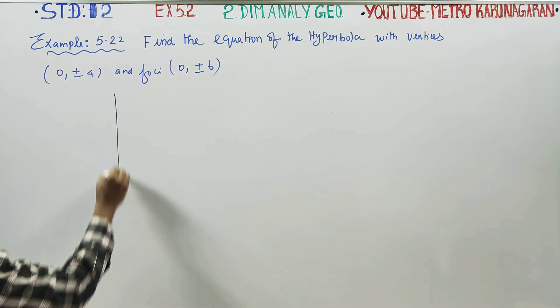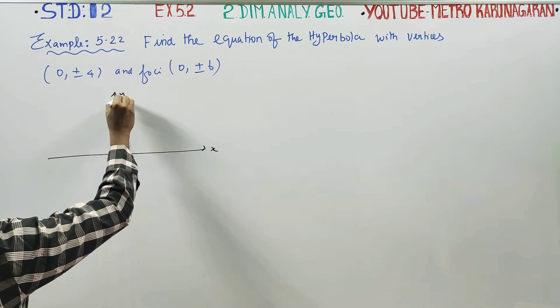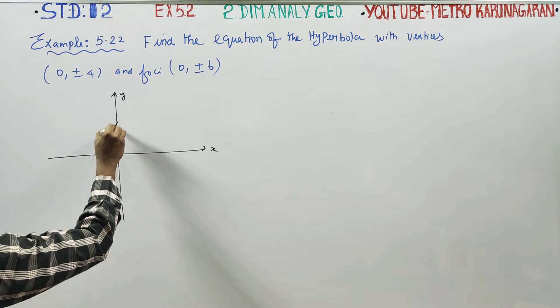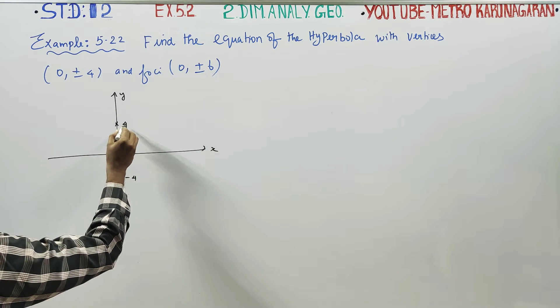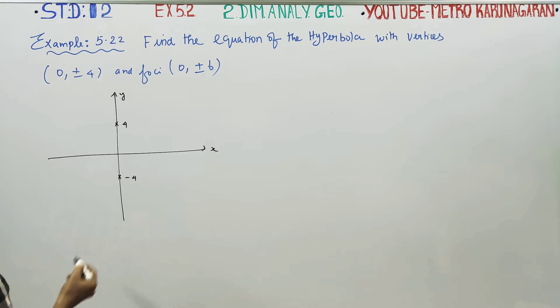First, we will fix our x-axis and y-axis. My vertices are plus or minus 4. Let it be plus 4 and let it be minus 4. Therefore, this point will be (0, +4) and (0, -4).